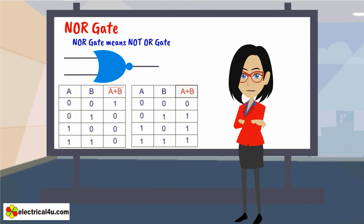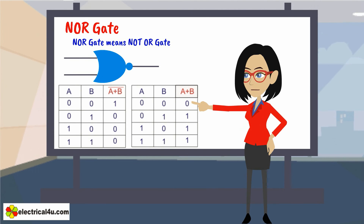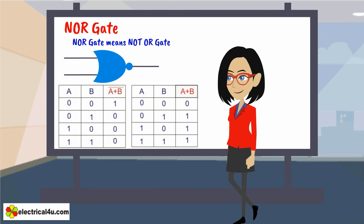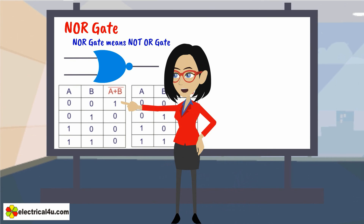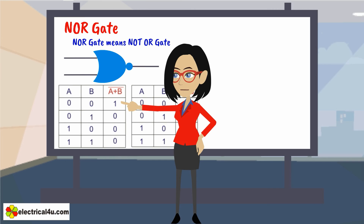NOR gate means NOT OR gate, which means the output of this gate is just the reverse of that of a similar OR gate. We know that the output of an OR gate is 0 only when all inputs are 0. But in the case of NOR gate, the output is 1 only when all inputs are 0. In all other combinations of inputs, the output is 0.